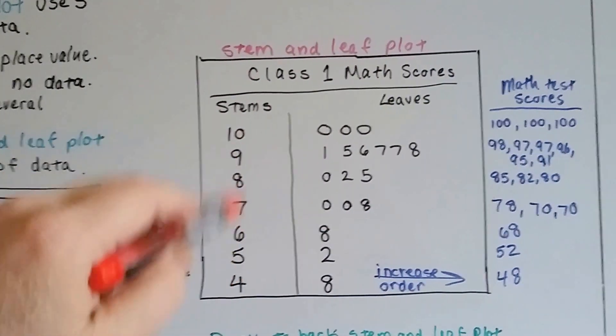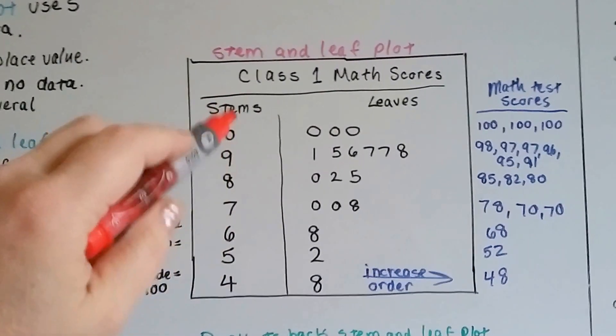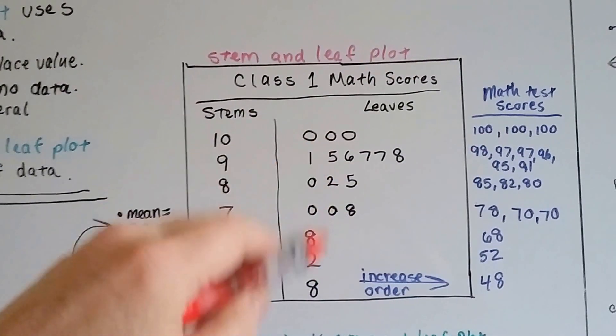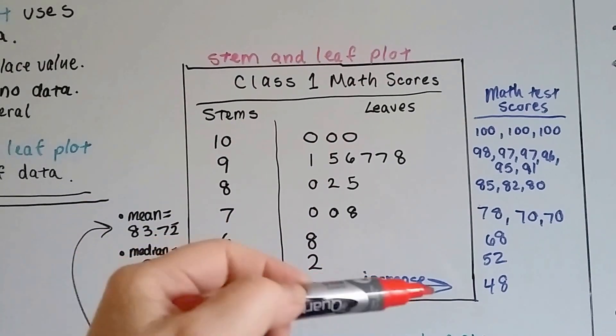then the tens place is put in the stems and the ones place is put in the leaves. And see it goes in increasing order. So keep this in mind as I show you this.